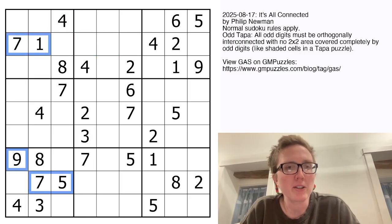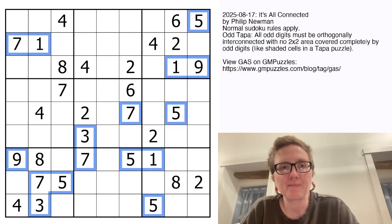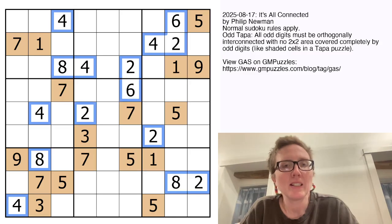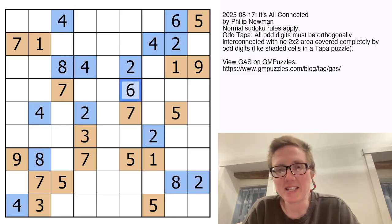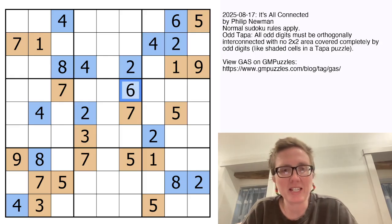So we are going to color. I'm going to start by coloring all of the odd digits orange and all of the even digits blue. And Philip advised when he posted this that we solve it by focusing on the tapa rules first. And so to some extent, I'm going to do that. I'm going to try to do some coloring and do some identifying the odd connected path.